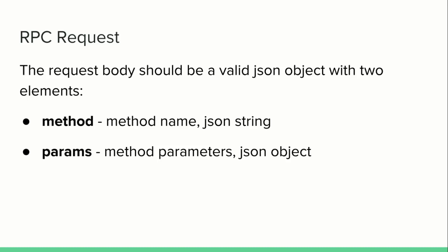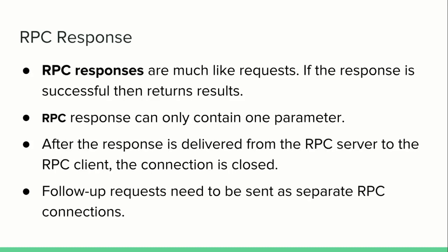The request body should be a valid JSON object with two elements: method, which is a JSON string, and params, the method parameter which is a JSON object. RPC responses are much like requests; if the response is successful, it returns results, and an RPC response can only contain one parameter. After the response is delivered from the RPC server to the RPC client, the connection will be closed, and follow-up requests need to be sent as separate RPC connections.